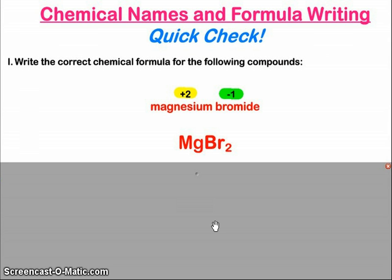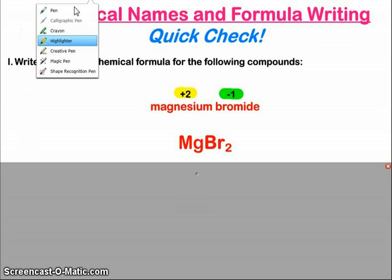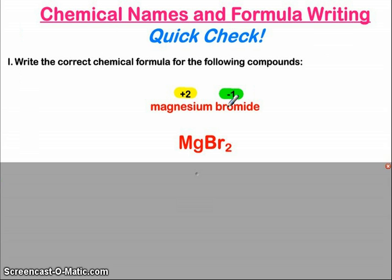And so again, to make sure that we have a net ionic charge of zero, I'm going to need one of my magnesium and two of my bromides. That's the crisscross that we've mentioned before. One of the magnesiums, two of the bromides. So that's why it's a one to two ratio.